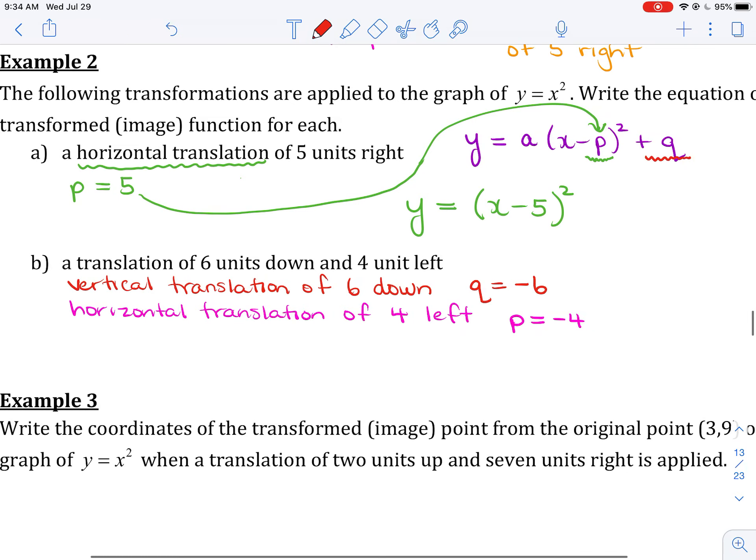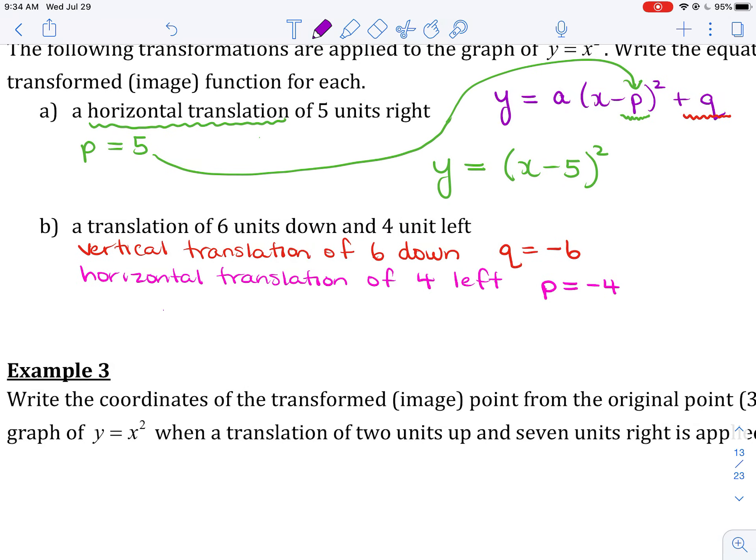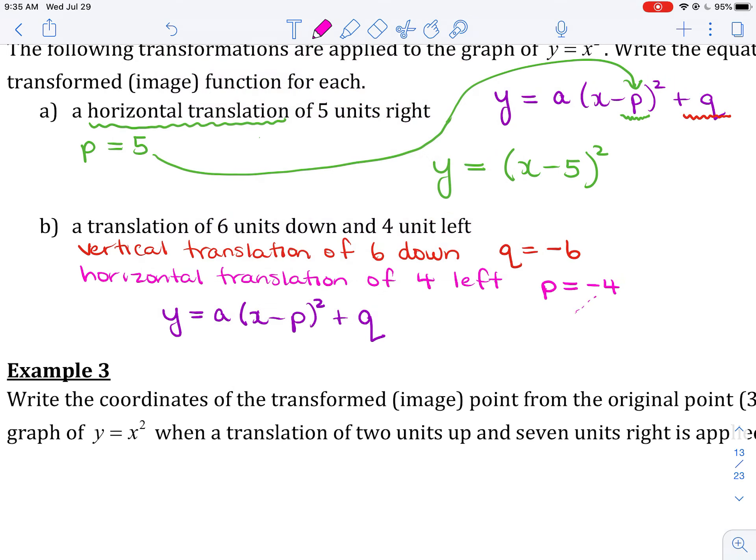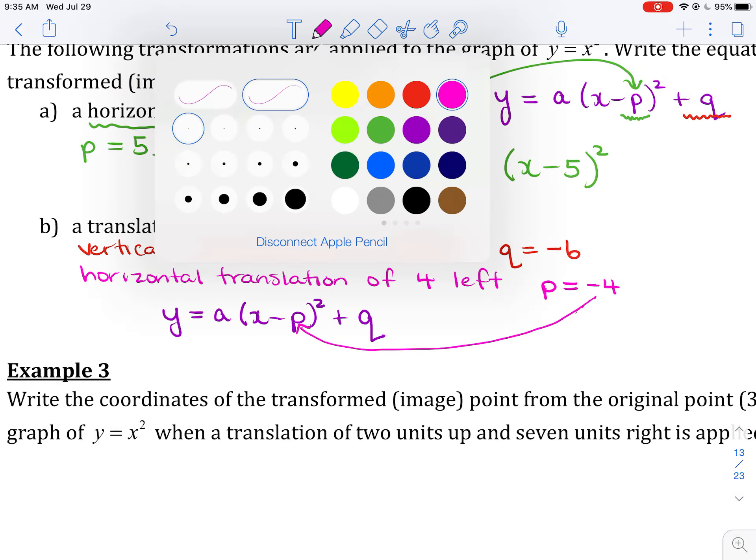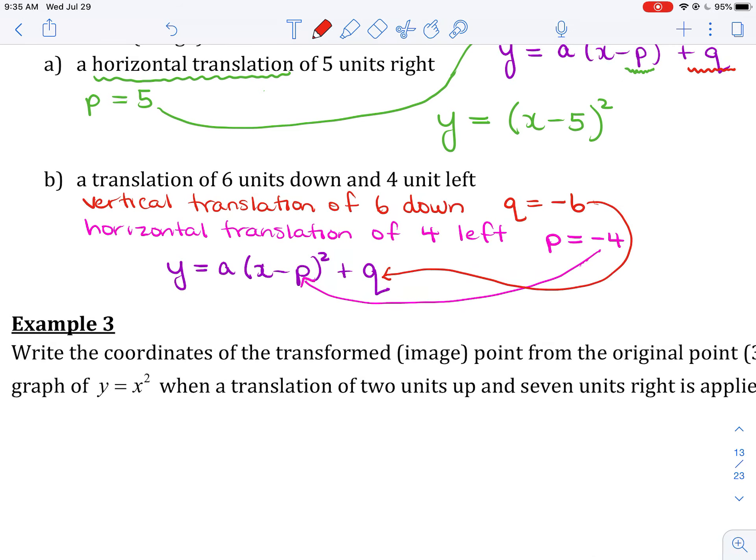So what I'm going to do here is I'm going to just start by rewriting this vertex form. Sometimes I call it the skeleton—it's just kind of like the outline that we use or the template to substitute into. So I am going to take this P value of negative 4, and it's going to come in here in place of P. And then I'm going to take the Q value of negative 6, and that's going to go in for Q.